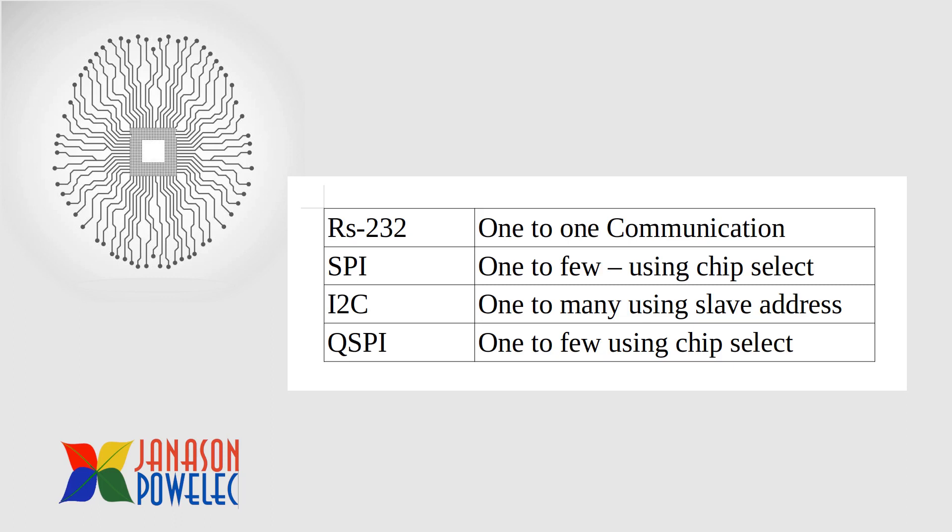Let us briefly compare various serial communication modes. RS-232 is always one-to-one communication — for example, microcontroller to printer. SPI is one-to-few using chip select, so four or five devices can be connected. It is limited only by the number of IO pins available for chip select.